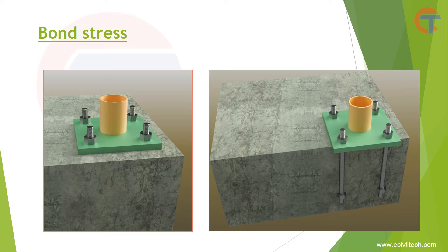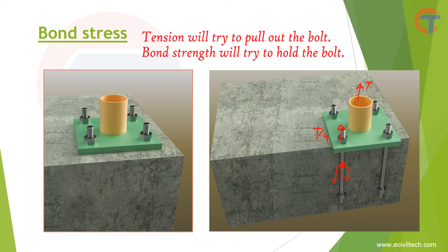Basically, when the tension force comes on the bolt it will be transferred by the bond stress between the concrete and the bolt. Assume tension load T is coming, so T/4 will be transferred on each bolt. The tension acts in the upward direction on the bolt, and the bond resists in the downward direction. The bond between the anchor bolt and the concrete will resist this pull-out, and the bond strength will try to hold the bolt.